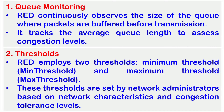RED employs two thresholds: a minimum threshold (min threshold) and a maximum threshold (max threshold). These thresholds are set by network administrators based on network characteristics and congestion tolerance levels, and they guide when RED takes action to prevent congestion.